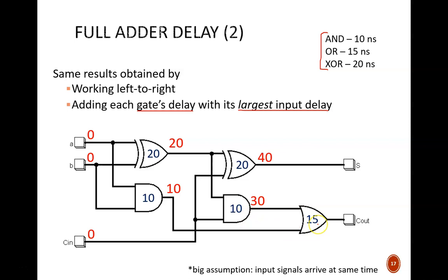Now for the final OR gate. The two input delays are 30 and 10. I take the largest of these, 30, and add that to 15 through the gate. The result is 45 nanoseconds. These are the same output signal delays computed on the previous slide, so we have confidence that this quicker approach works. This will work for any gate-level logic circuit.